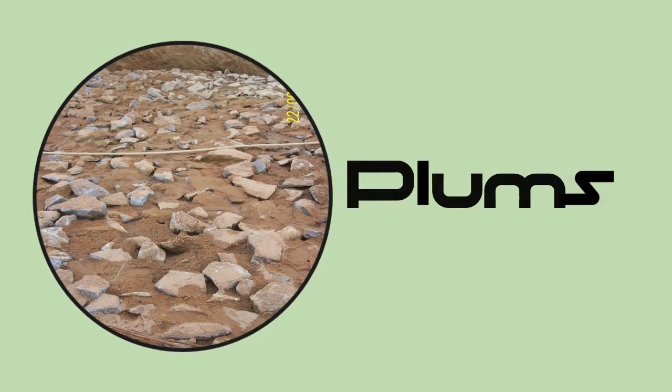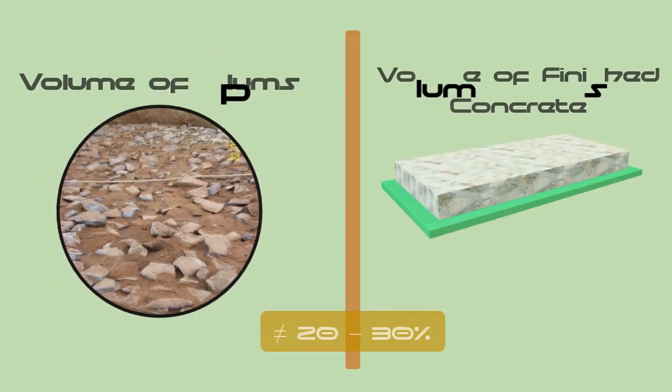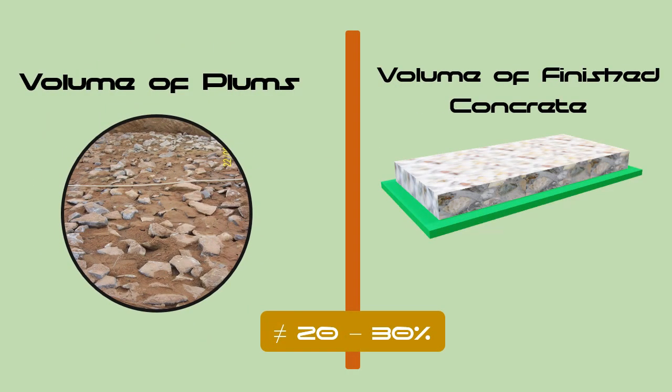The large stones are called plums and are used in making mass concrete. However, the volume of plums should not exceed 20 to 30 percentage of the total volume of the finished concrete.